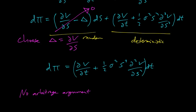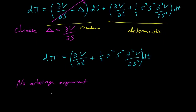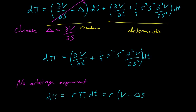Since we have an entirely deterministic equation, we can use the no-arbitrage argument: if cash flows are known, they must be equal. Another known deterministic cash flow is putting money in the bank. The change of a bank account is the interest rate times the amount of money times the time step. So that means r times our position — long the option, short some amount of stock — times dt.